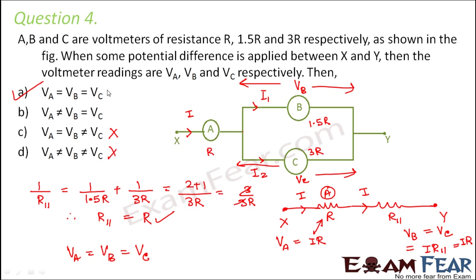So you just have two choices: A or B. To decide between A and B, quickly calculate R_parallel. The moment R_parallel equals R, which is the same value as the first resistance, you know that option A is the right option. So even without solving in detail, you can choose the right option.